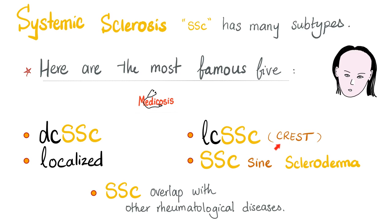What is CREST? C is calcinosis. R is Raynaud's phenomenon. E is esophageal dysmotility. S is sclerodactyly. T is telangiectasia.